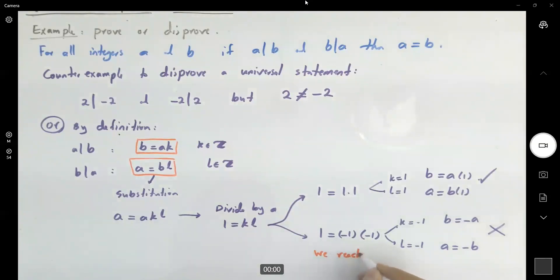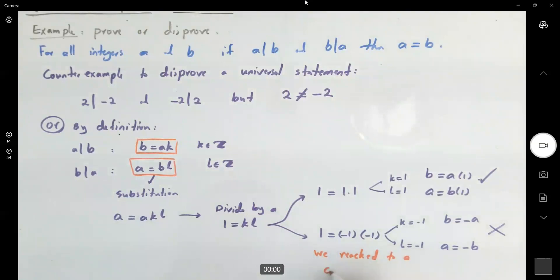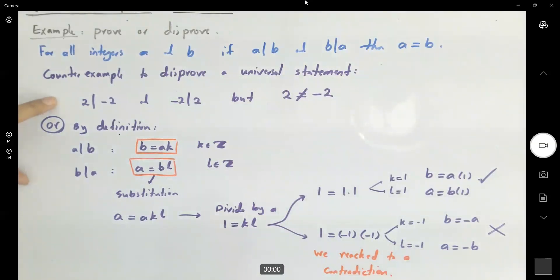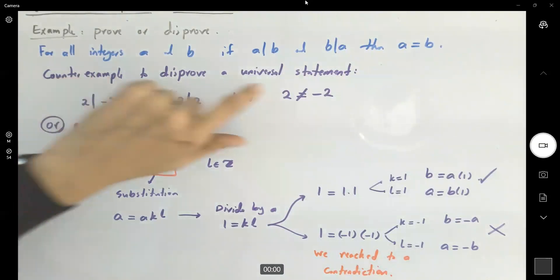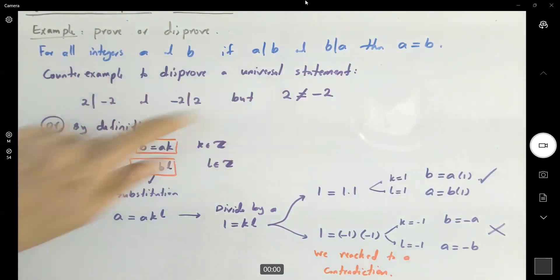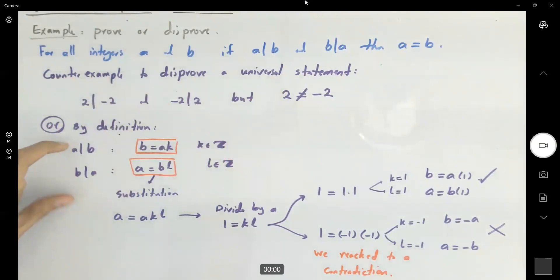We reached a contradiction. So we disproved the universal statement by following the direct definition and arriving at a contradiction.